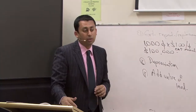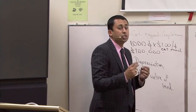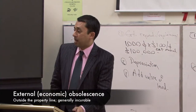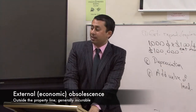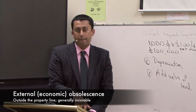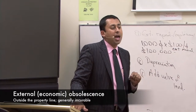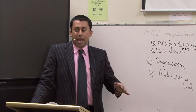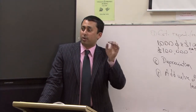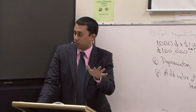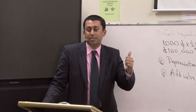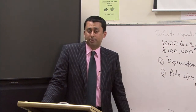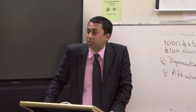Economic obsolescence — below that on page 388 — the book actually calls it external obsolescence, but I would make a note that it's also called economic obsolescence. Next to that, I would write 'outside the property line,' and below that, 'usually incurable.' To review: functional obsolescence is inside the property line and usually curable. External or economic obsolescence is outside the property line and usually incurable.